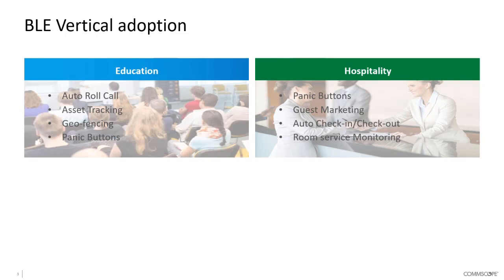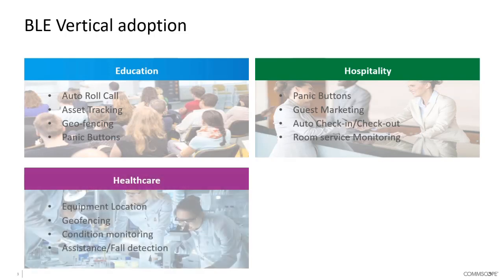In a hospitality arena, the same technology provides similar functionality. Panic buttons remain a useful capability, and guest marketing is another opportunity — providing information on how to access the wireless network or the state of the environment when guests arrive. Auto check-in and check-out can be enabled: as a user walks into the building, their key card is automatically sent to their phone. Room service monitoring allows staff movements to be tracked, automatically indicating when a room has been cleaned and is ready to be reassigned.